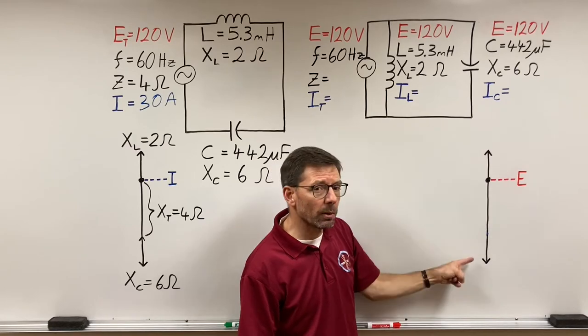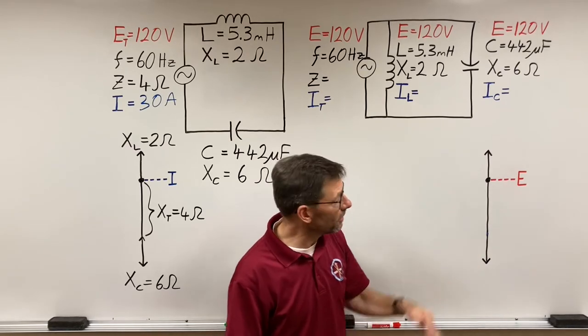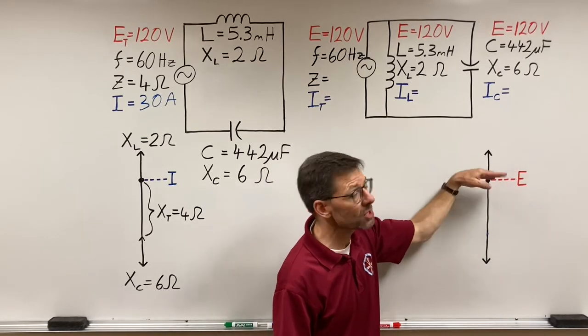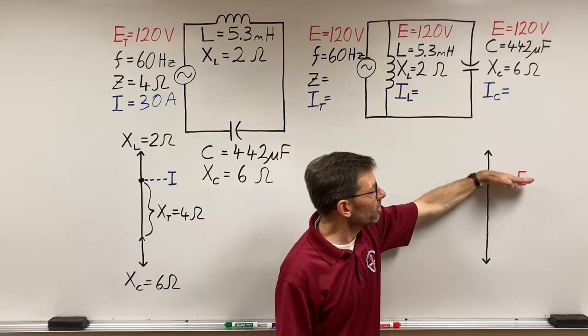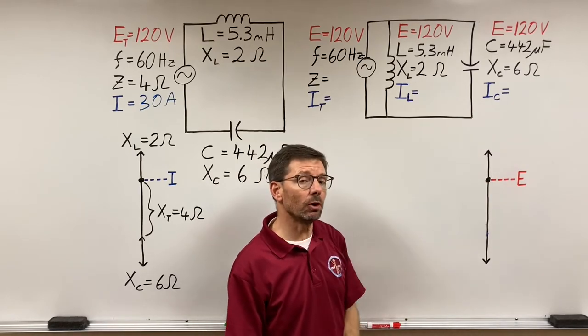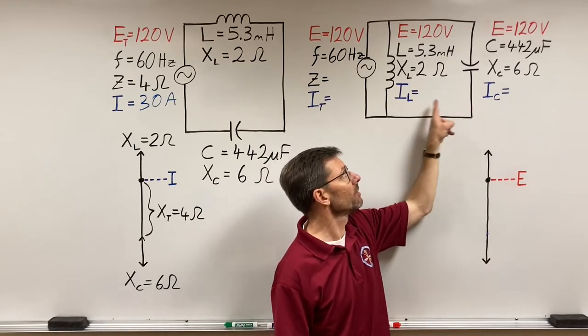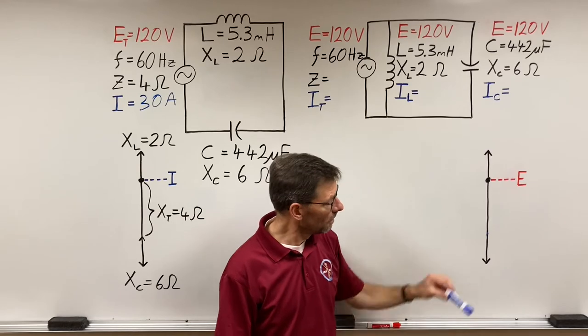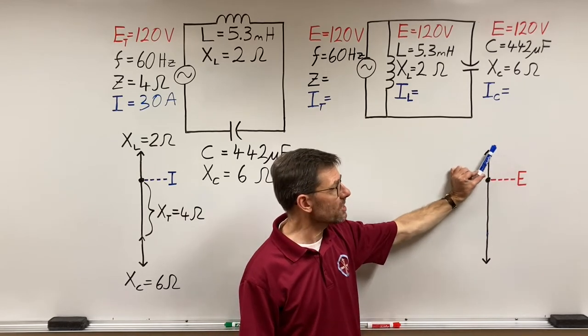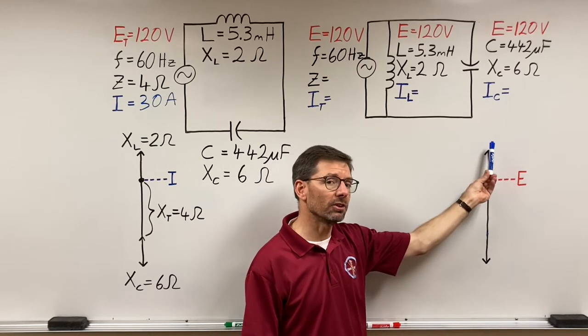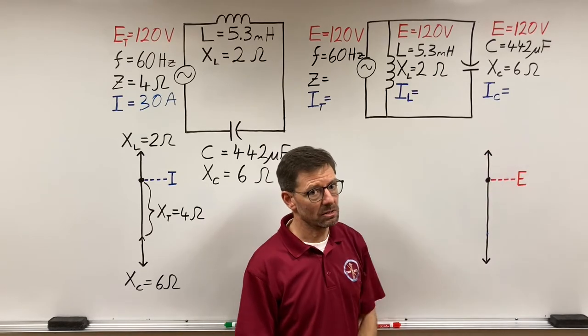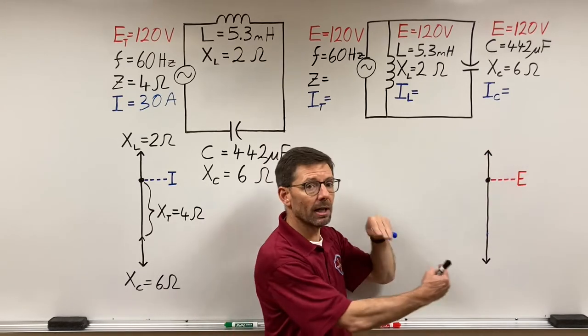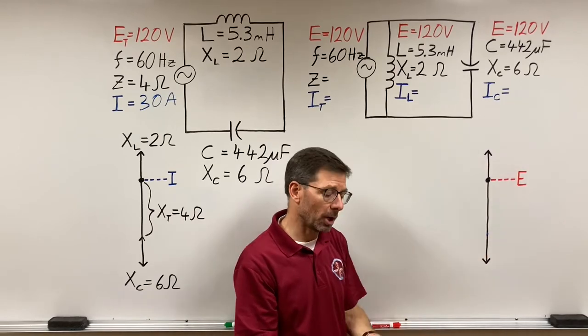But which is going to point which direction? Just as a reminder, voltage is the reference. Same on every branch in a parallel circuit. Since voltage is the reference, which current leads the voltage? Capacitive or inductive? The capacitive current leads the voltage, and the inductor's current lags the voltage. So remember in parallel, they flip. Capacitor top, inductor bottom.